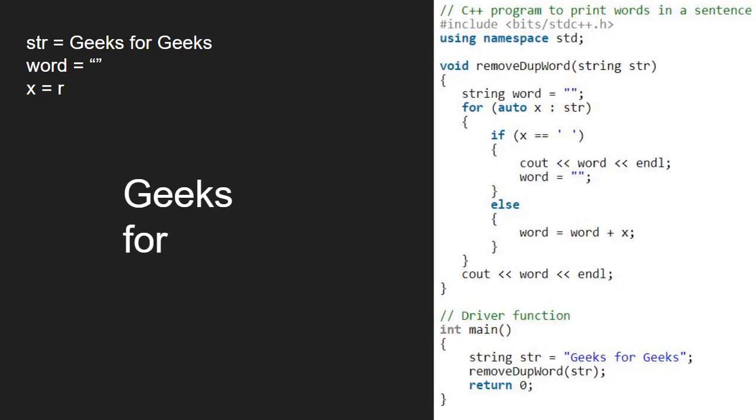We continue iteration in the for loop till the end of string. The last word that is geeks will be stored in word after appending each character. We come out of the for loop and print word. geeks will be printed. We have the final output.